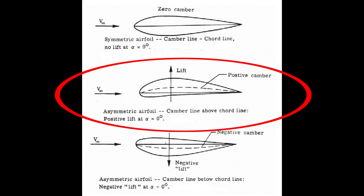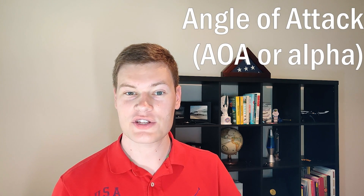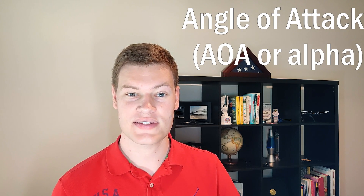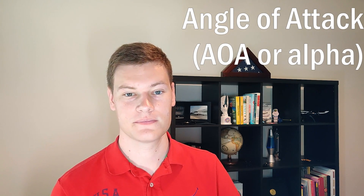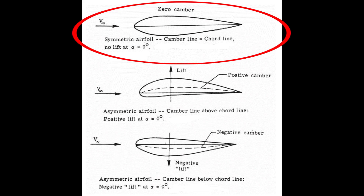Camber is perhaps the most defining characteristic of an airfoil. If an airfoil is curved upwards it's said to be positively cambered, and an airfoil with positive camber can produce lift at level flight. The angle at which an aircraft is flying is known as the angle of attack, so at steady level flight your angle of attack is zero. Airfoils that have no camber are said to be symmetric, and symmetric airfoils produce no lift when the angle of attack is zero.